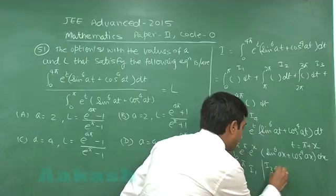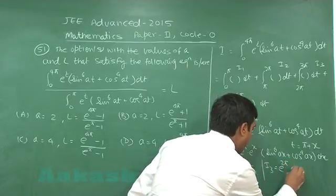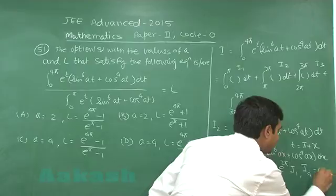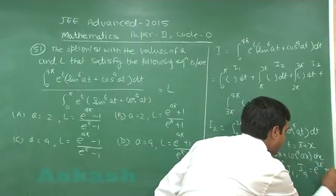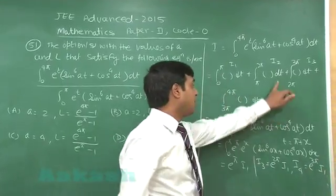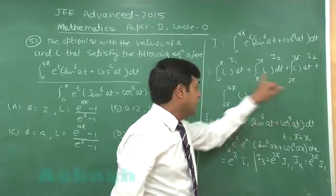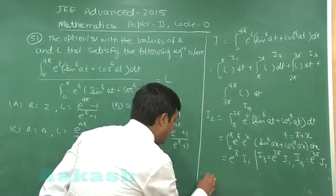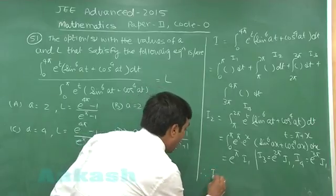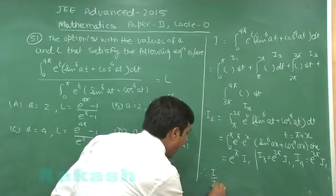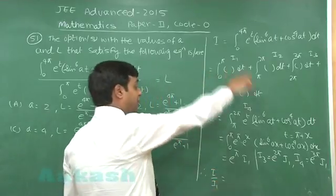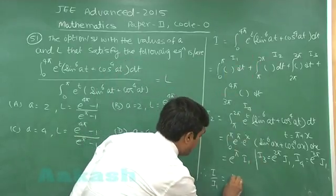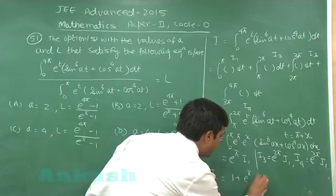Similarly, I₃ can be obtained as e^(2π) · I₁ — by substituting t = 2π + x — and I₄ as e^(3π) · I₁ by substituting t = 3π + x. So the ratio I/I₁ can be rewritten as 1 + e^π + e^(2π) + e^(3π).